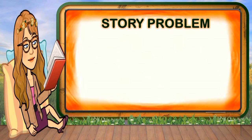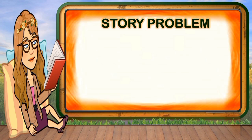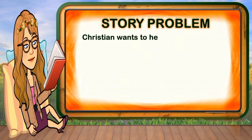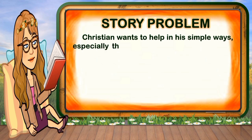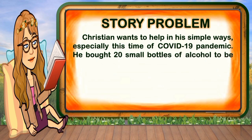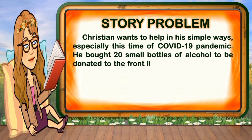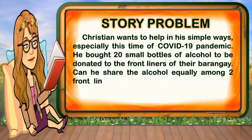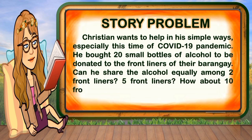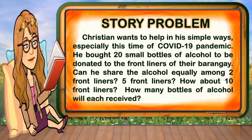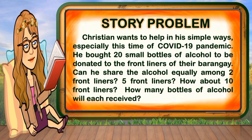Let us begin our class discussion by reading the story problem. Come, children, join me in reading this aloud. Christian wants to help in his simple ways, especially this time of the COVID-19 pandemic. He bought 20 small bottles of alcohol to be donated to the frontliners of their barangay. Can he share the alcohol equally among 2 frontliners? 5 frontliners? How about 10 frontliners? How many bottles of alcohol will each receive?